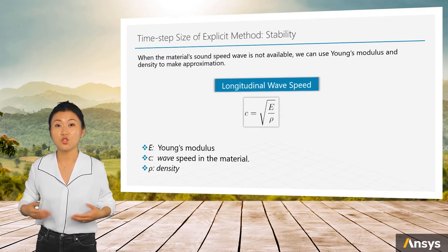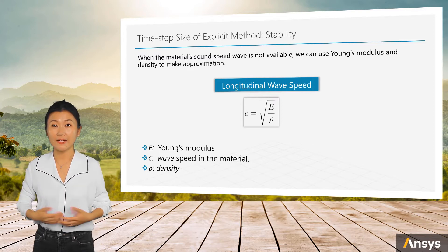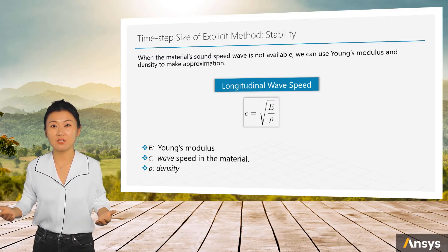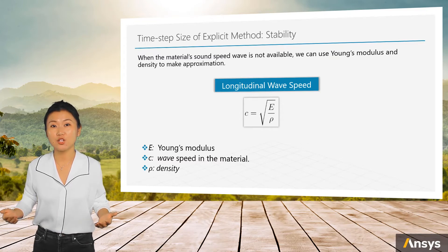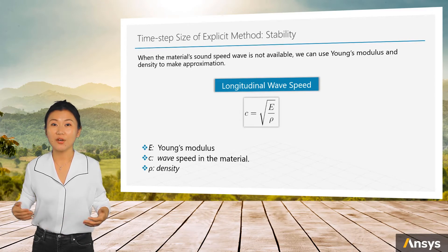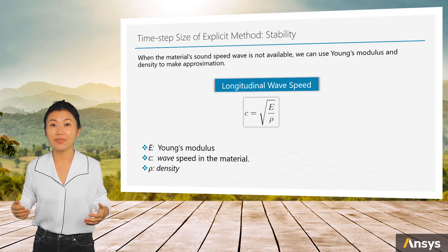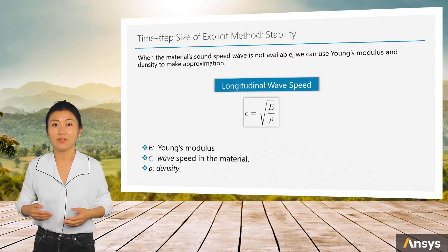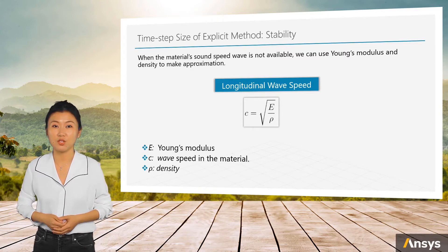There are transverse waves and longitudinal waves in a material. Longitudinal waves move faster than transverse waves. Therefore, the time step size is controlled by the longitudinal wave speed. The longitudinal elastic wave speed can be calculated from Young's modulus and density. The larger the Young's modulus, or the smaller the density, the larger the wave speed and the smaller the time step size that should be used.